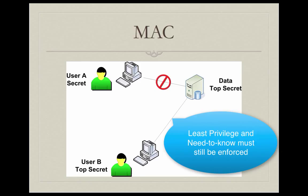To be clear, just because a user has the same classification as the data does not mean that user will always be able to access that data. In addition to tagging, we usually implement role-based access control or something similar so that we can enforce need to know, least privilege, and separation of duties. The user should only have access to what they need to do their jobs, even if they're classified at the same level as the data they're attempting to access.